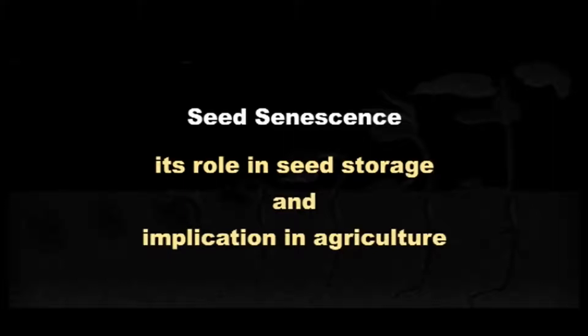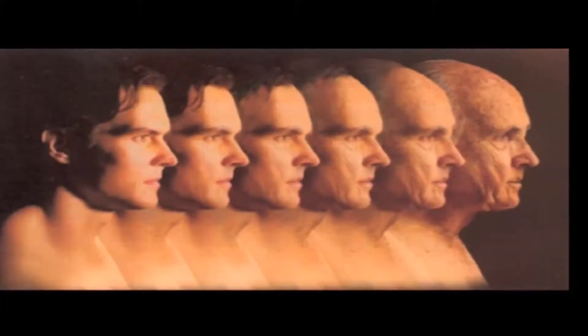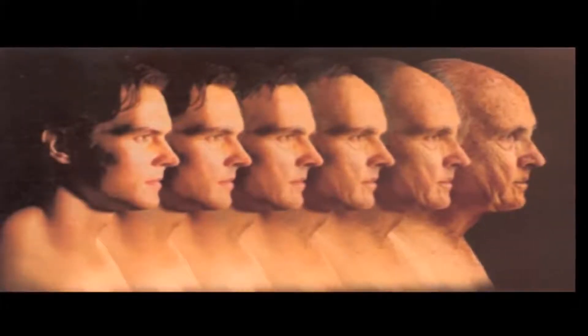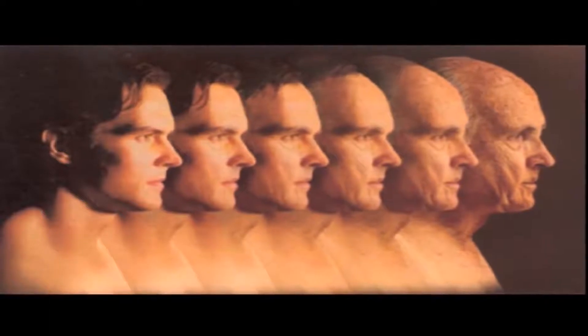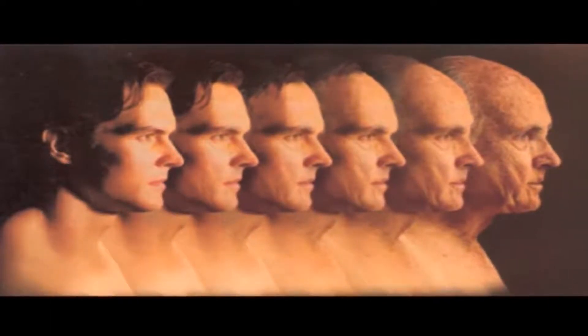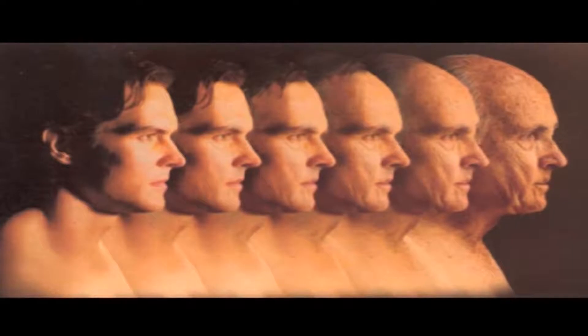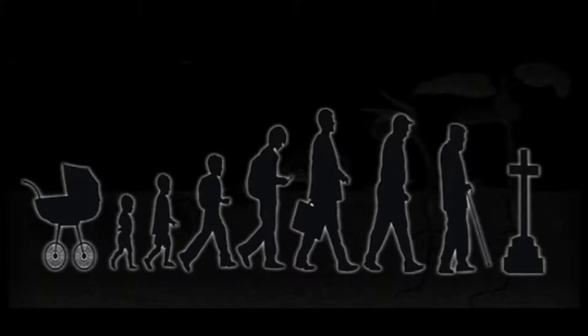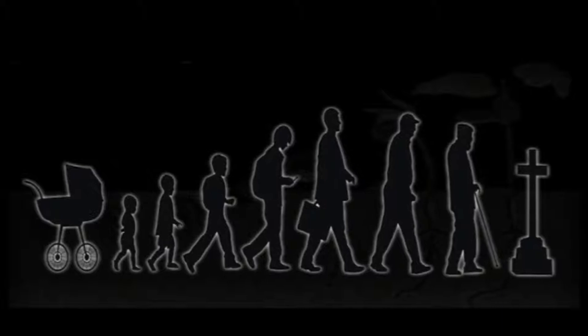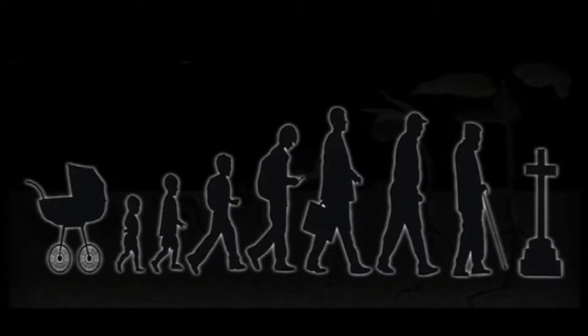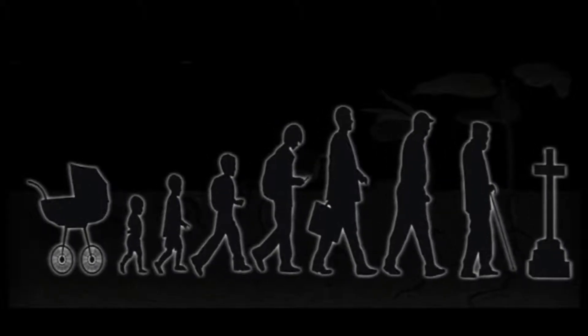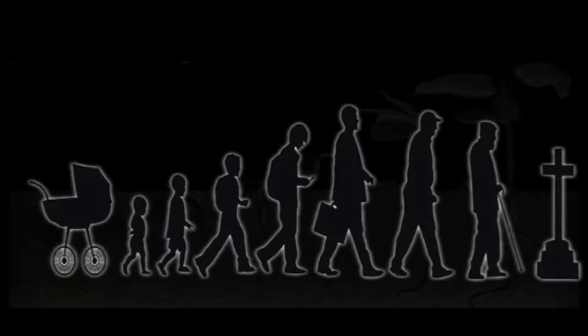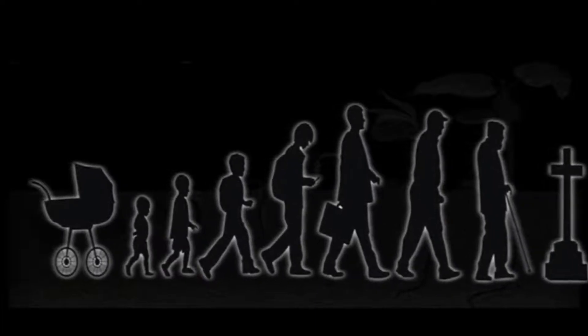In simple sense, senescence means aging. Aging is a series of deteriorative processes that naturally terminate the functional life of an organ or organism. Senescence is an irreversible process. All living organisms age just like we humans, who are born as a child, then become youth, followed by middle age, and finally become old and die.